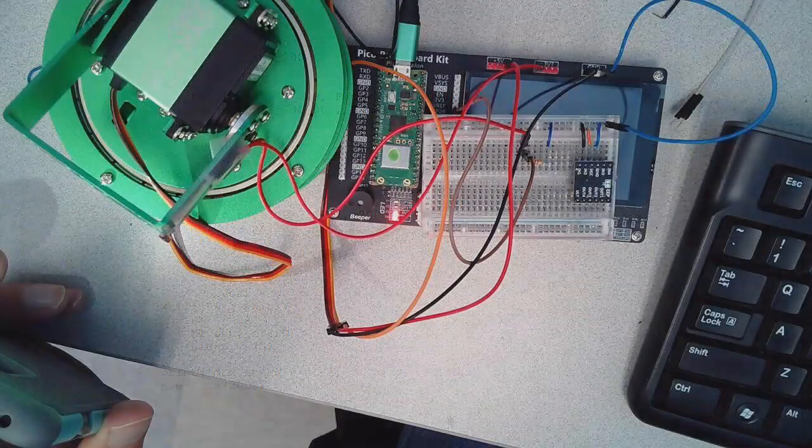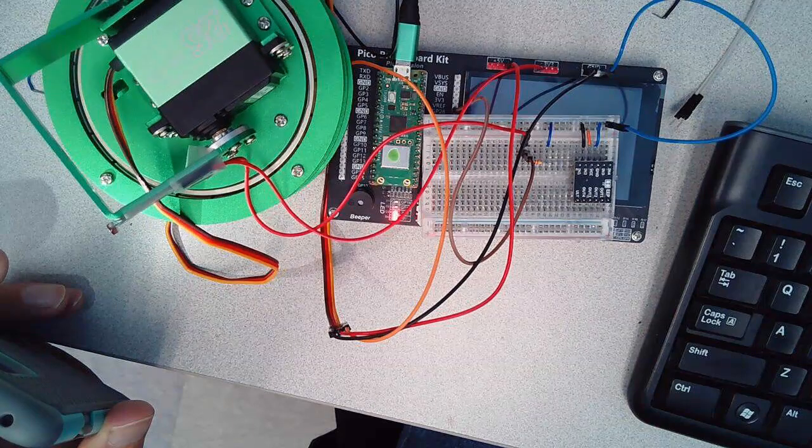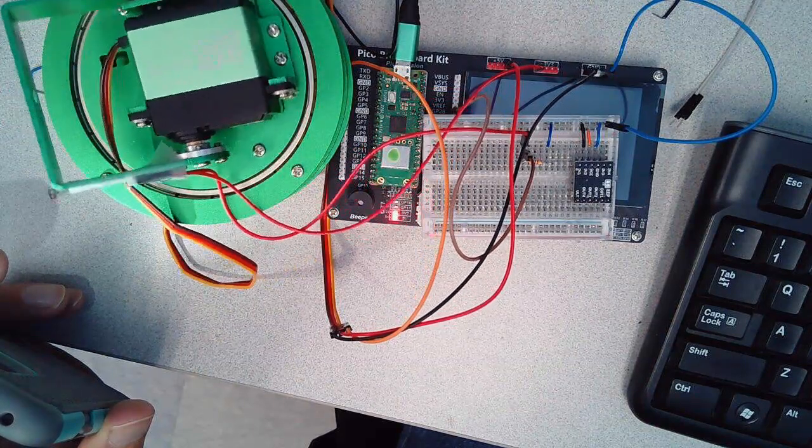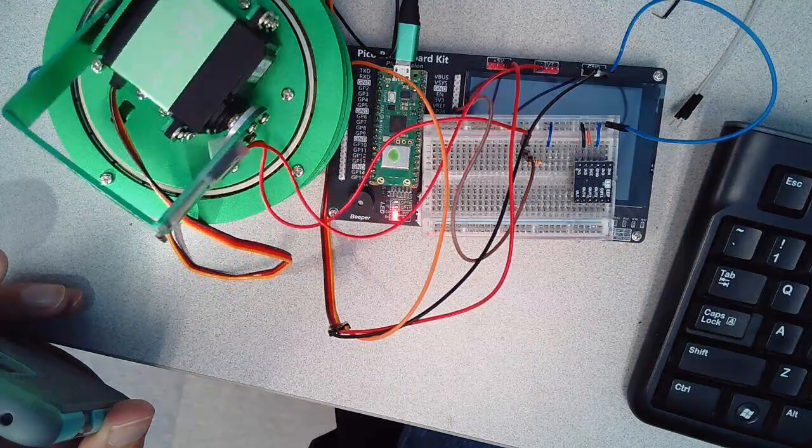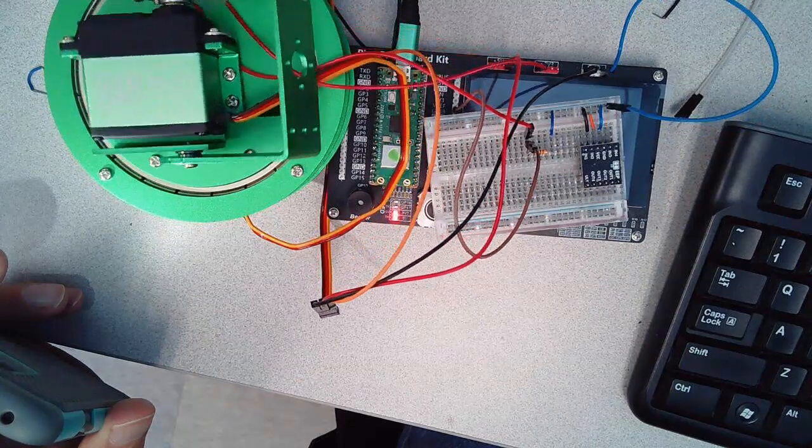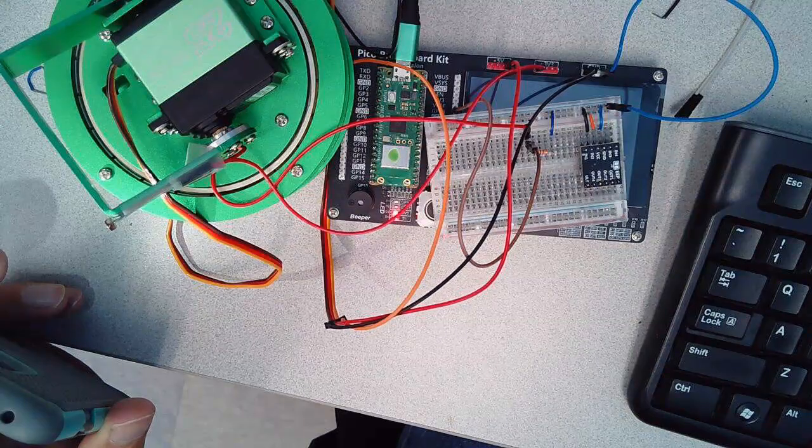And again, this is what that looks like. If I restart, it sweeps between 0.5 and 2.5 milliseconds, recording the voltage. Wherever the voltage was the maximum, go to that pulse width.